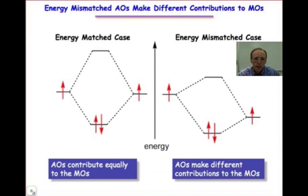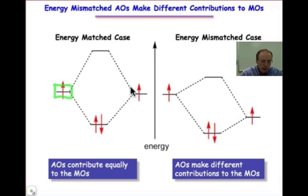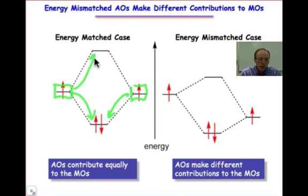This webcast makes the point that atomic orbital combinations that are mismatched in energy result in polar covalent bonds. For the energy matched case, the atomic orbitals contribute equally to both the bonding molecular orbital and the antibonding molecular orbital.